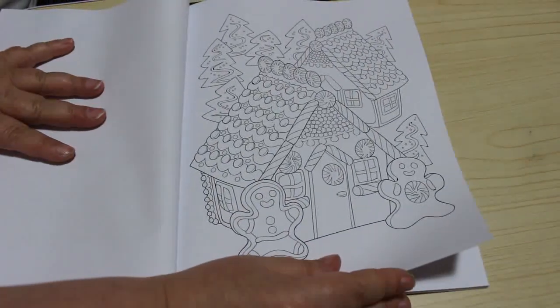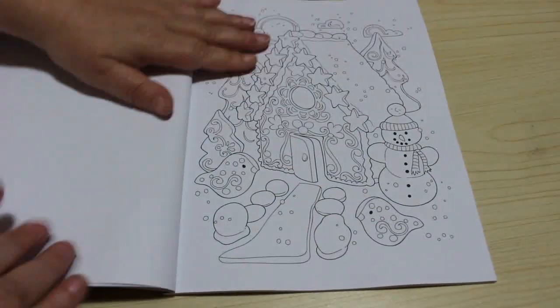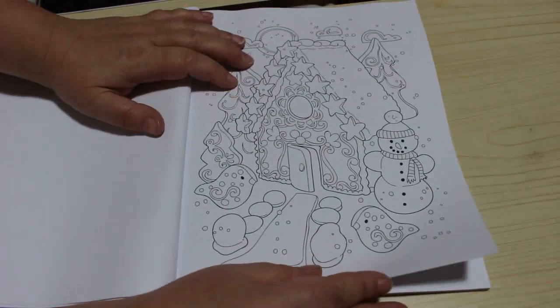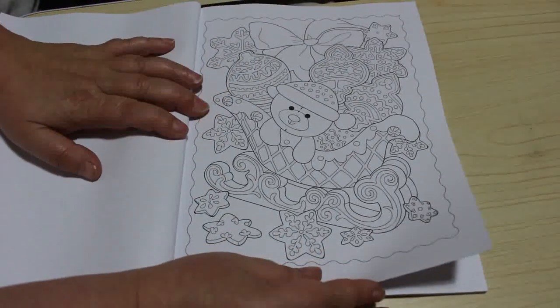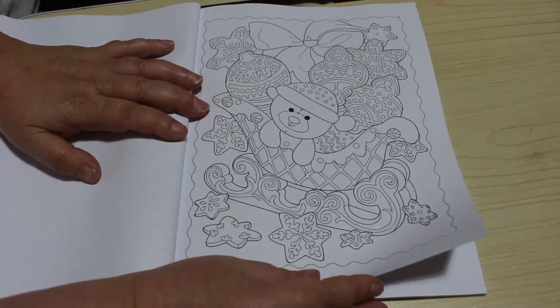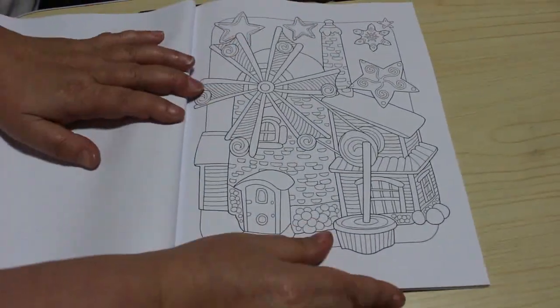And then we've got this one. So they're all gingerbread houses. Looking at it, that's a nice one. The little stars on it. Oh, the teddy bear in the sleigh with the, oh, that's cute.